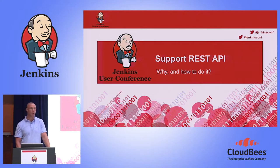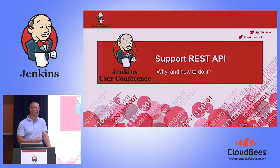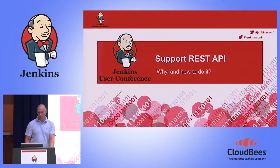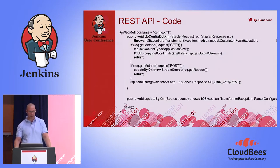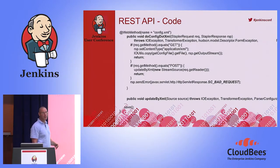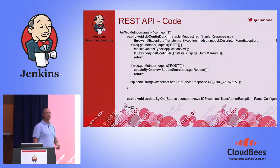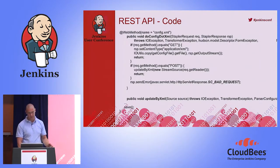One reason we support the REST API is that you can automatically generate jobs — that was a requirement we had. You typically create a lot of jobs and want to do that automatically. We provide a way via the REST API for people using our plugins. The code snippet shows how easy it is: the top part is an HTTP GET on the server, and then a POST method where you take out what you need and do the functionality behind the API.